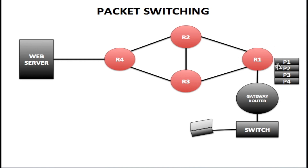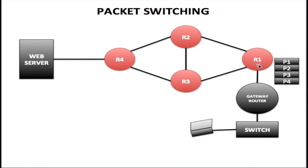R1 is the first router on the internet. The job of this router is to use packet switching to get these packets to the web server as quickly as possible. The router selects one packet at a time and sends it along its way. For P1, R1 decides whether to send it to R2 or R3 — in this case it sends it to R2. R2 then decides whether to send P1 directly to R4 or via R3; in this case the quickest route is directly to R4, and then on to the web server.